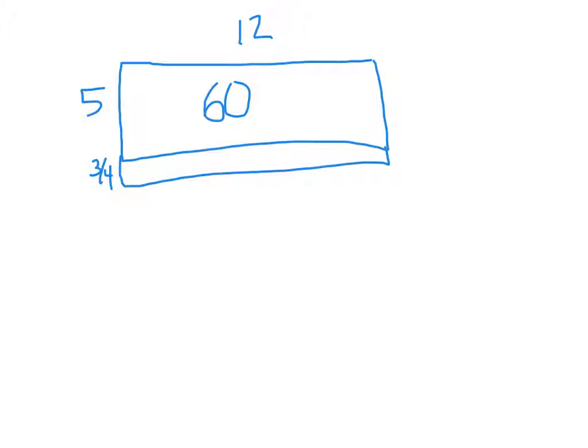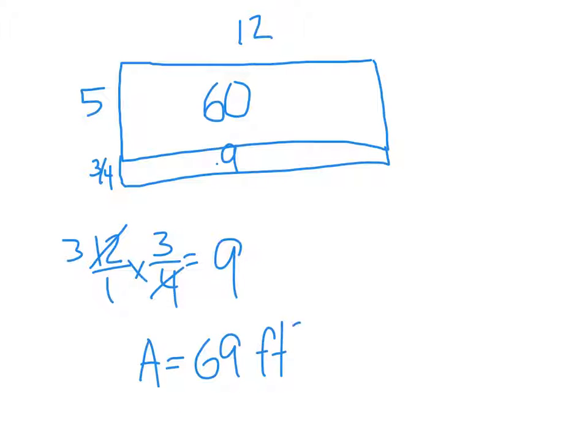And then this area here is going to be 12 times three quarters, or nine. So my area is going to equal 69. In this case we have feet squared.